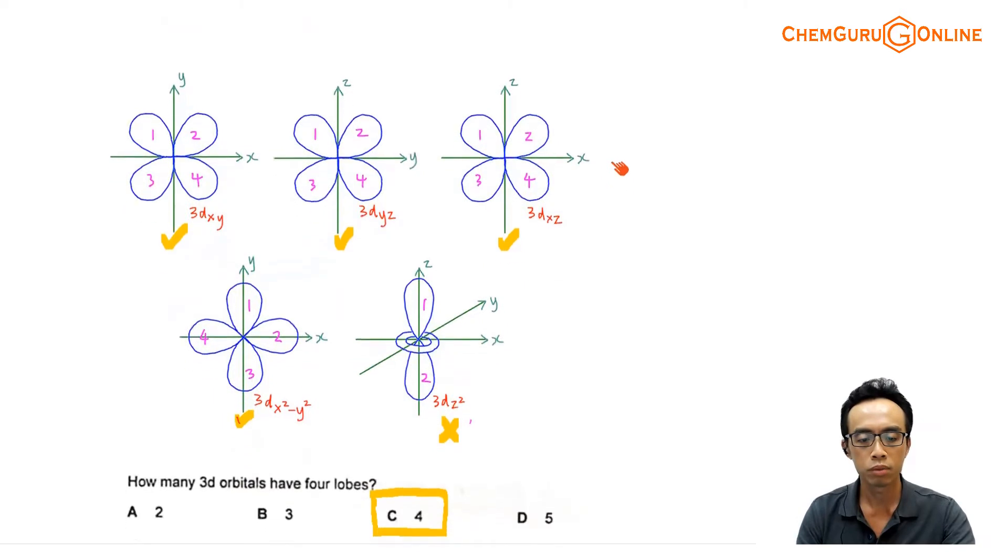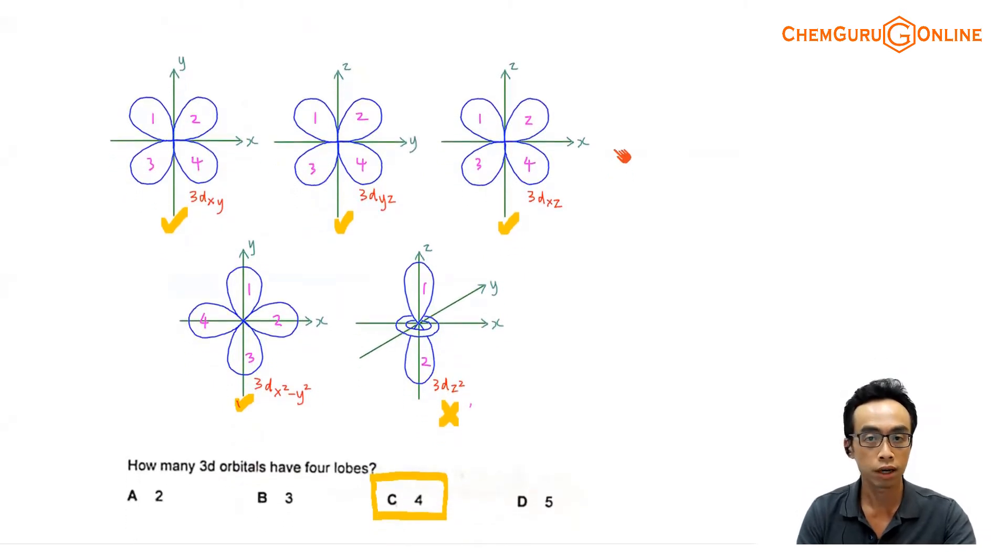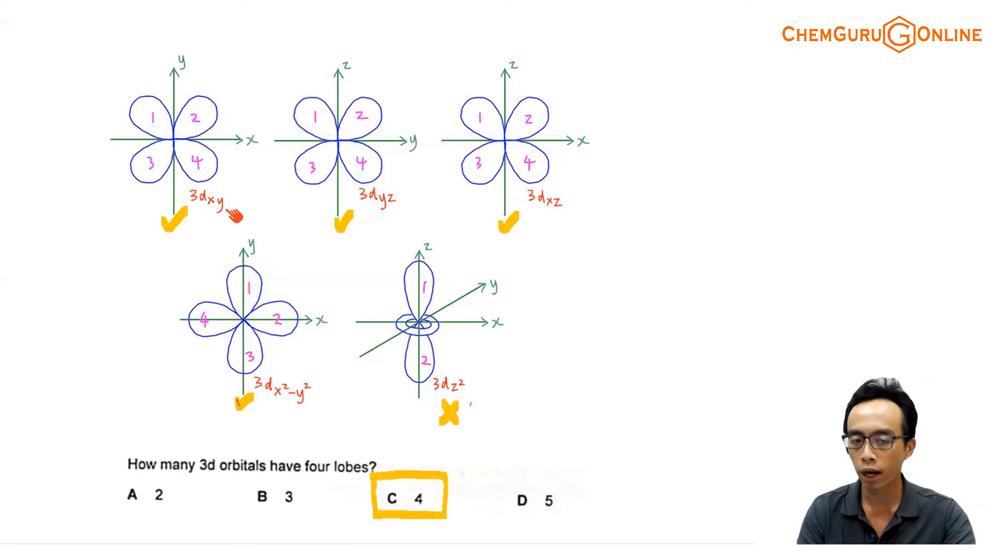So let's take a look at our d orbitals. We have in total 5 d orbitals: dxy, dyz, dxz, dx²-y², and dz². So these are the 5 in total. One way to draw them, which I think is simpler, is we fix the orientation of our d orbitals. We change the axis.